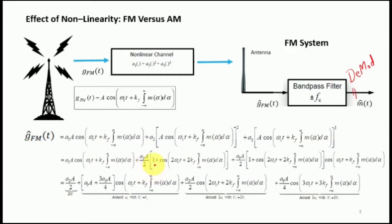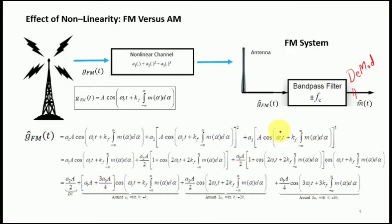Sorting all terms by frequency, we observe that a2·A/2 is not multiplied by any sinusoid, so it contributes to the DC content. For the frequency component centered around ωc·t, we have the first term from the second equality centered at ωc, and also a cosine ωc·t term from the third term. We use the identity cos(α)·cos(β) = (1/2)cos(α−β) + (1/2)cos(α+β) to combine these.